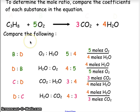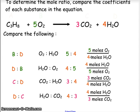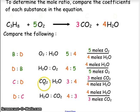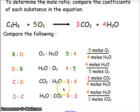Completing the remaining mole ratios for this balanced chemical equation: B to D — oxygen to water — is a five-to-four ratio, five moles of oxygen to four moles of water. D to B — water to oxygen — is a four-to-five ratio, four moles of water to five moles of oxygen. C to D — carbon dioxide to water — is a three-to-four ratio, three moles of carbon dioxide for four moles of water. And D to C — water to carbon dioxide — is a four-to-three ratio, four moles of water to three moles of carbon dioxide.